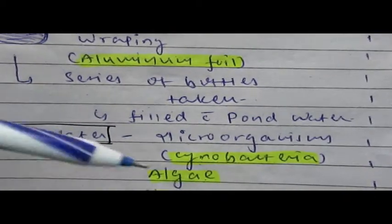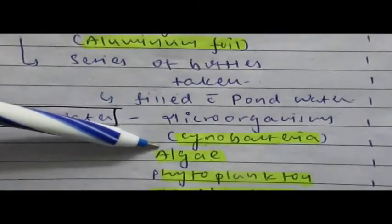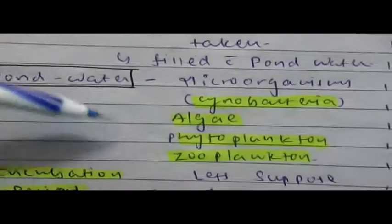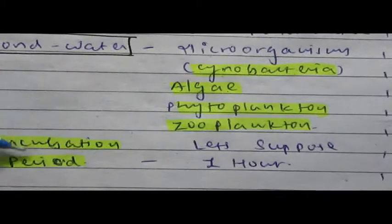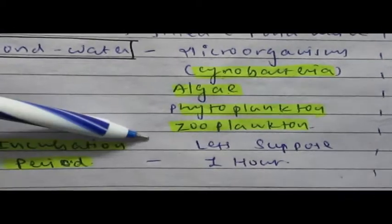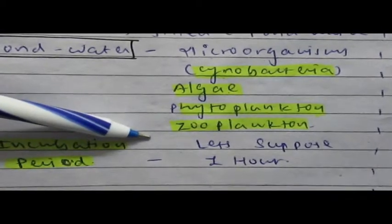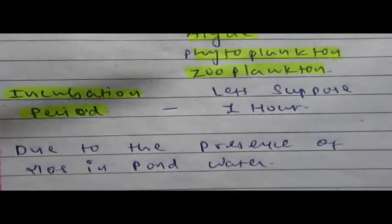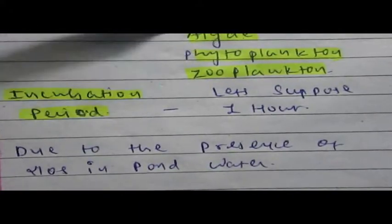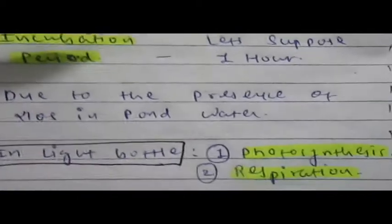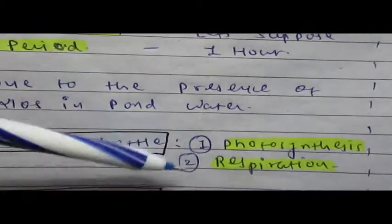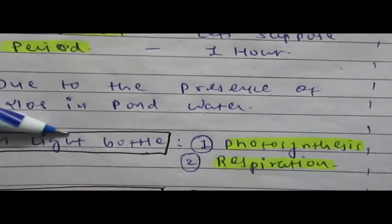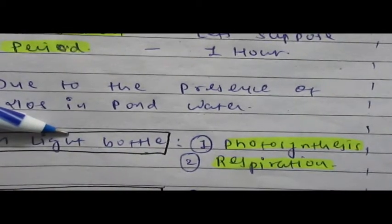This pond water contains microorganisms like cyanobacteria, cyanophyte algae, phytoplanktons, and zooplanktons. After that, an incubation period is set — for example, one hour. Due to the presence of these microorganisms, photosynthesis as well as respiration occur in the light bottle due to the presence of sunlight.